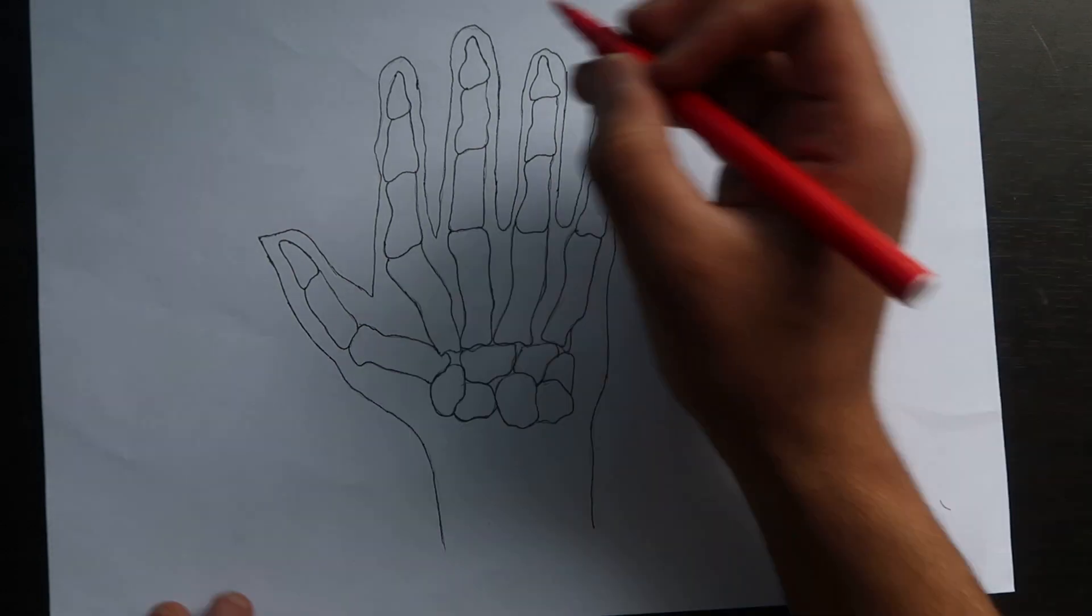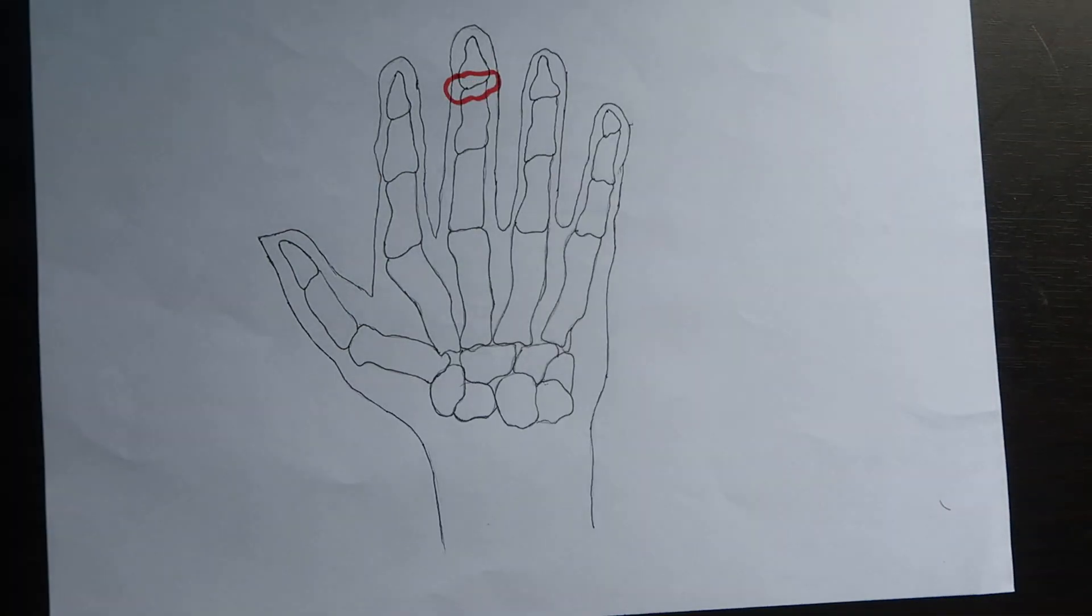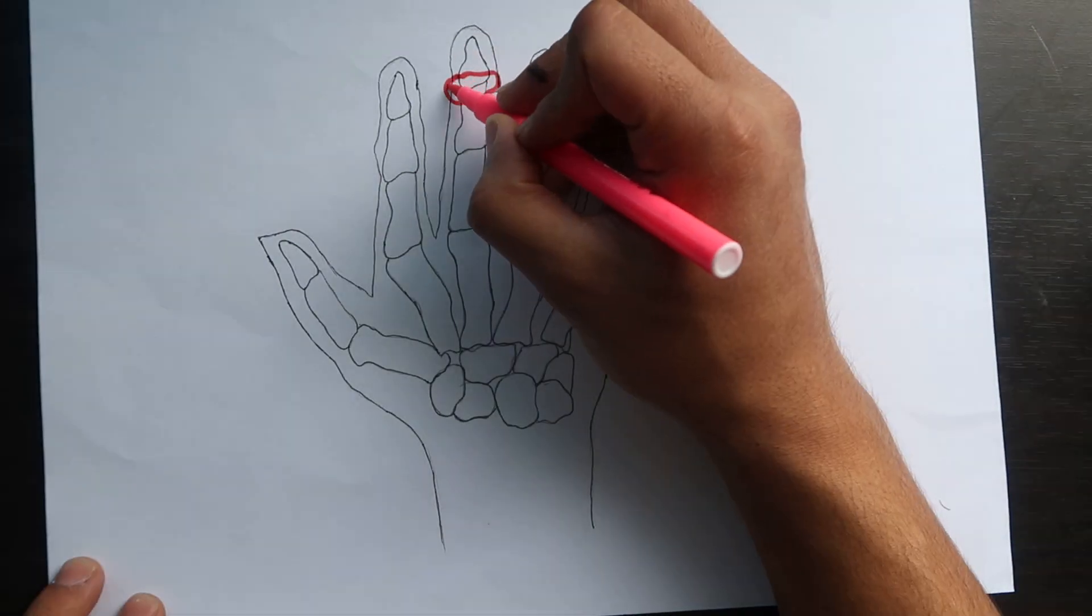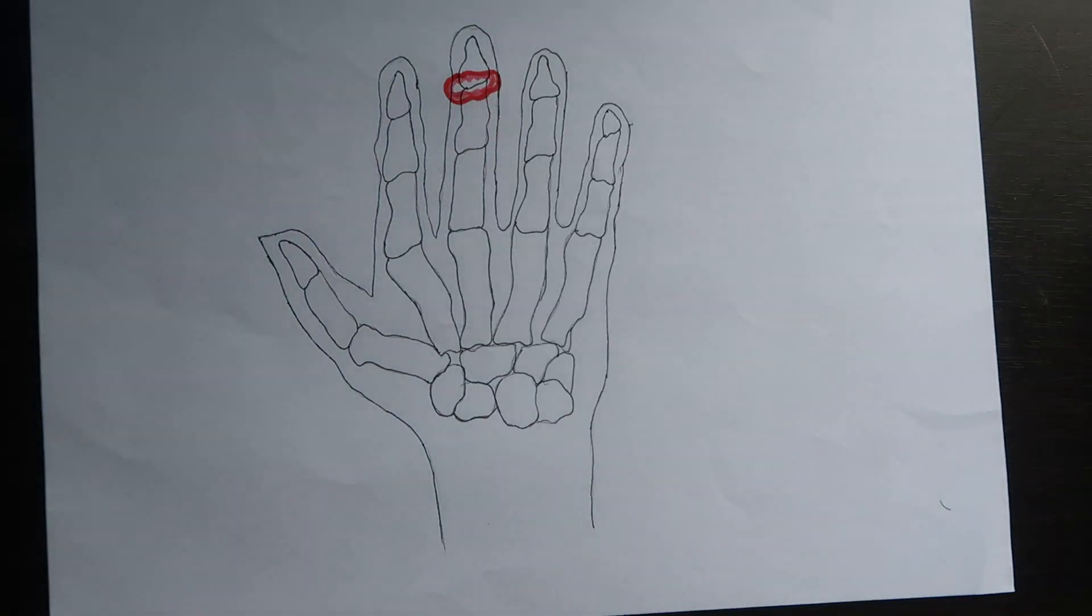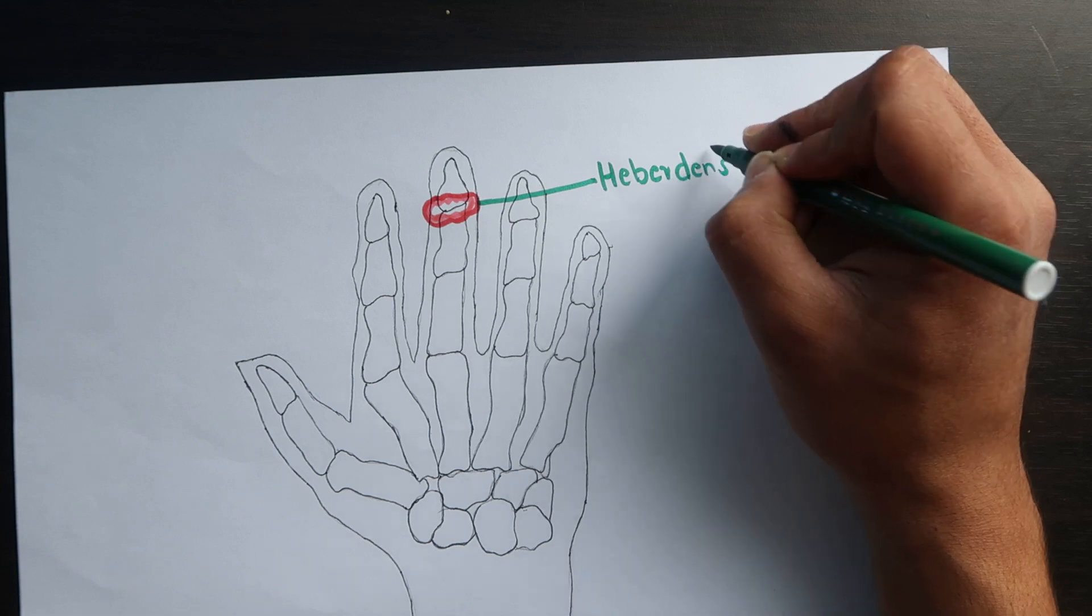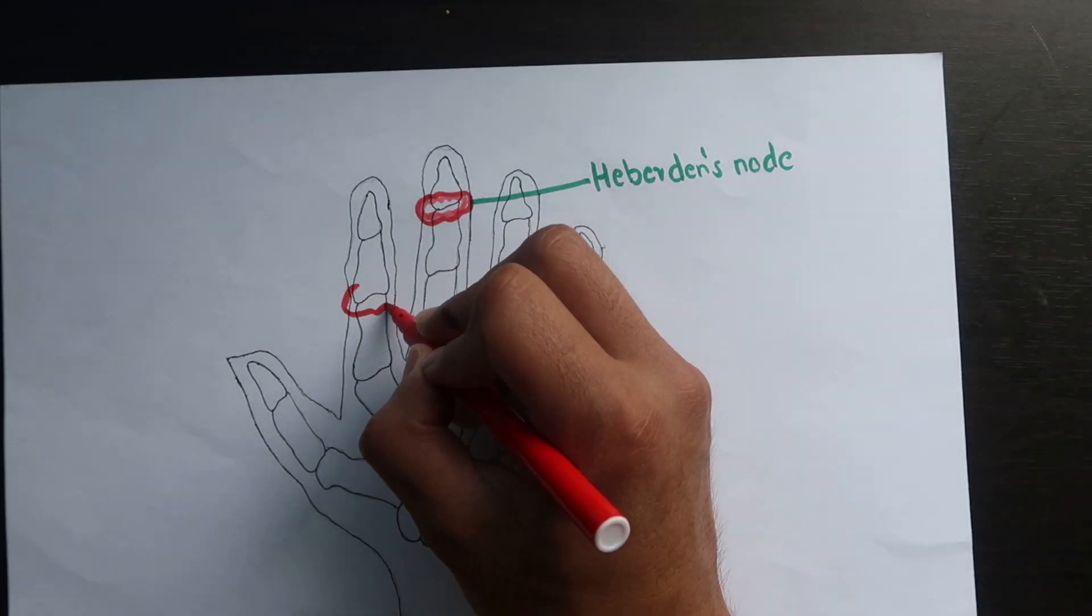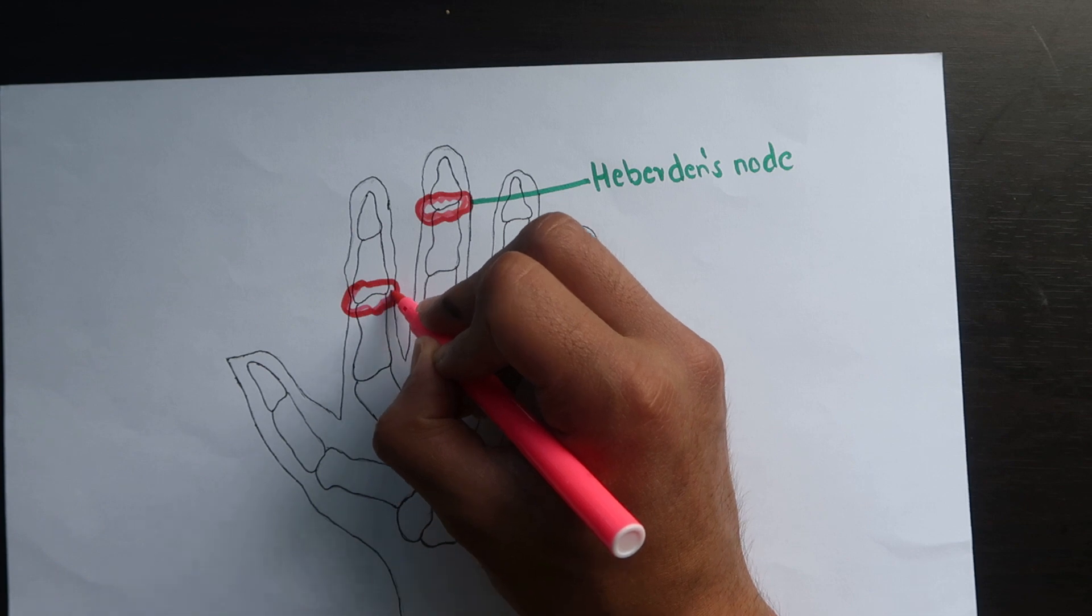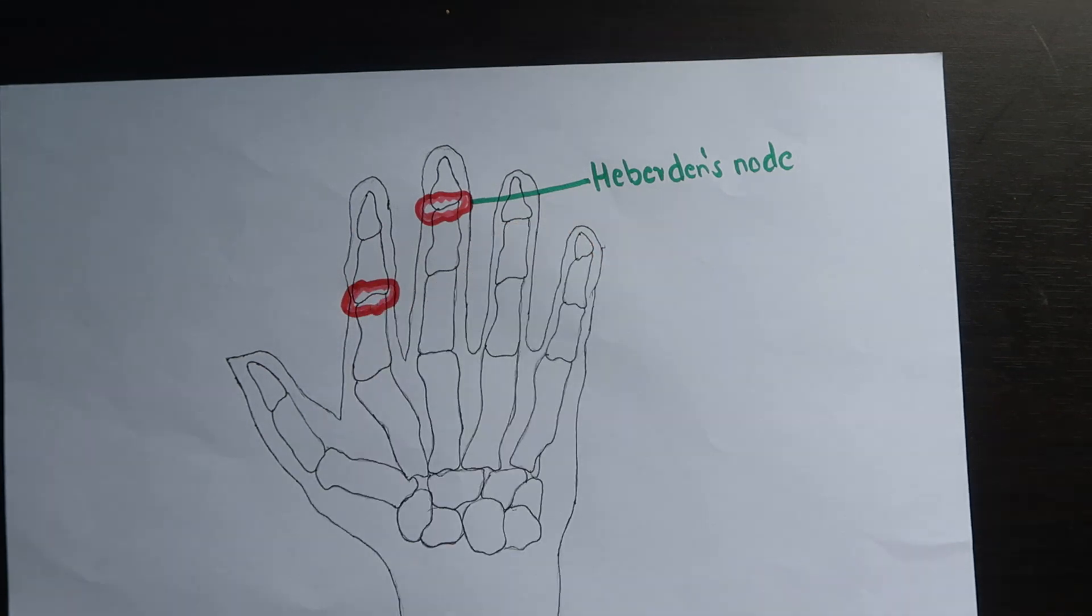Patients with generalized nodal osteoarthritis may be asymptomatic or may develop pain, stiffness, and swelling of one or more joints of the hands. Swelling and hardening of distal interphalangeal joint is also known as Heberden's node, and that of proximal interphalangeal joint is known as Bouchard's nodes.